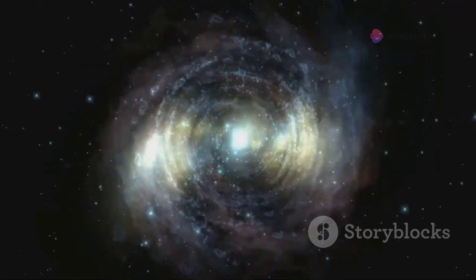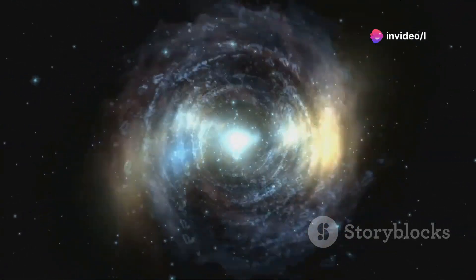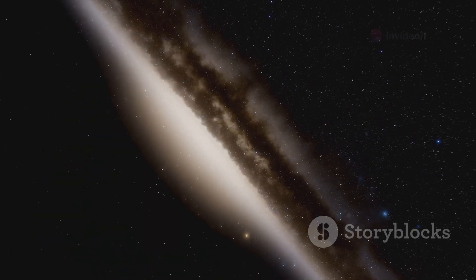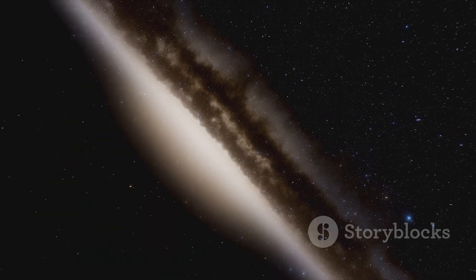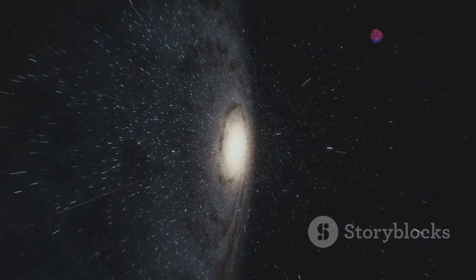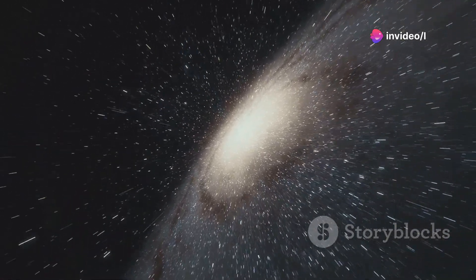The Milky Way, like other spiral galaxies, has a central bulge, a dense region packed with stars. At the very center of this bulge lies a supermassive black hole, a gravitational behemoth millions of times more massive than our sun. Our solar system orbits the Milky Way's center, completing one revolution every 230 million years.